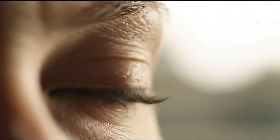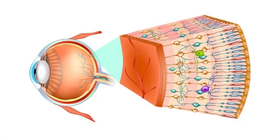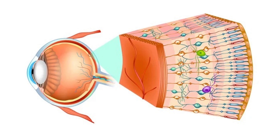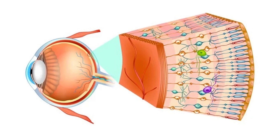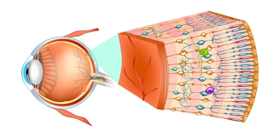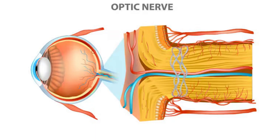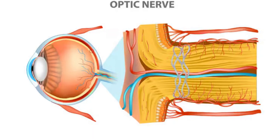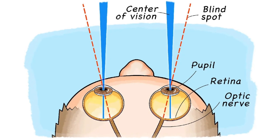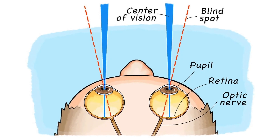Cones are concentrated in a small pit in the back of the retina, while most rods are located around it. This pit is near the exit point of the optic nerve, where there is a small gap in the retina. Light rays do not affect this area, which means that in the back of each eye, there is a tiny blind spot.